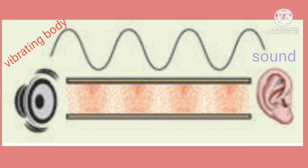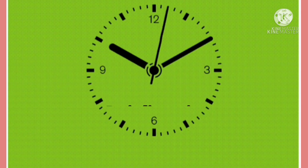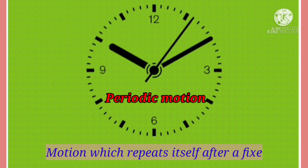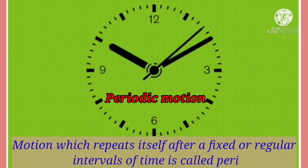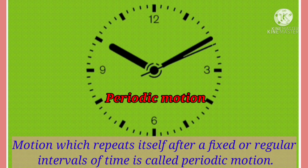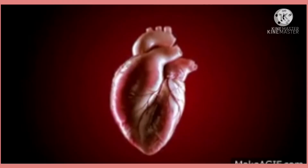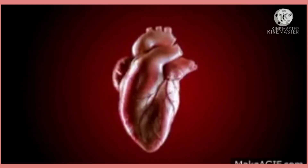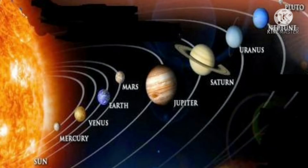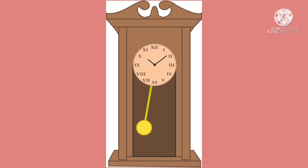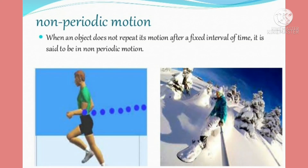A vibrating body produces sound. Next is periodic motion. Motion which repeats itself after fixed or regular intervals of time is called periodic motion. Beating of the heart, motion of the planets around the sun and around its axis, and motion of a pendulum are some examples of periodic motion.